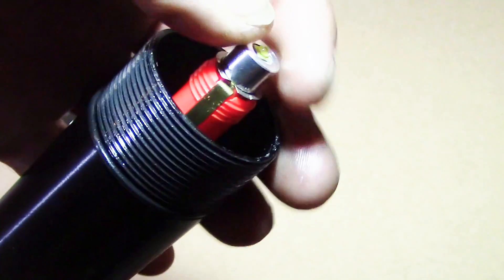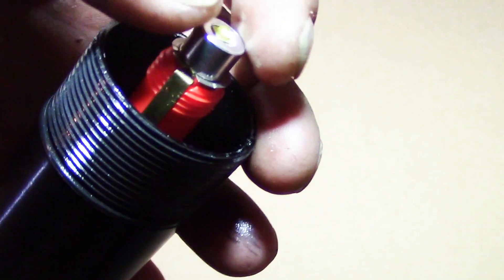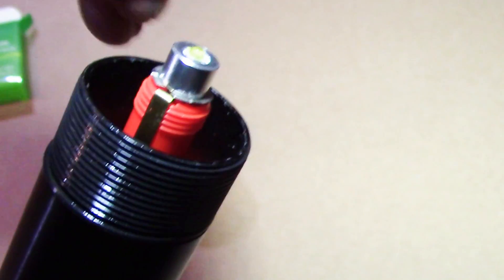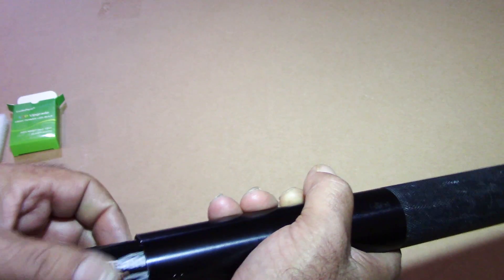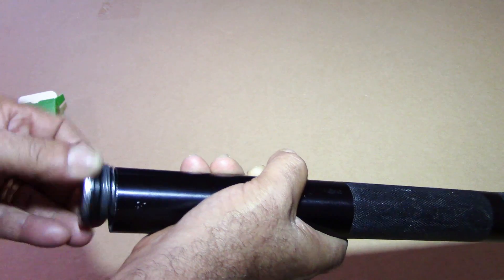Then screw the bulb retaining ring back on the socket, then put back the 4D batteries and screw the cap back on.